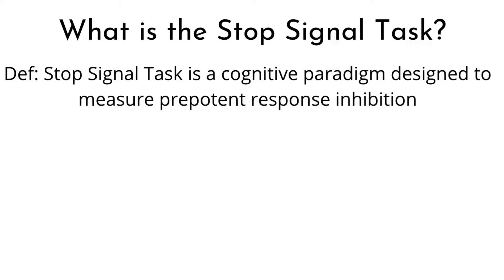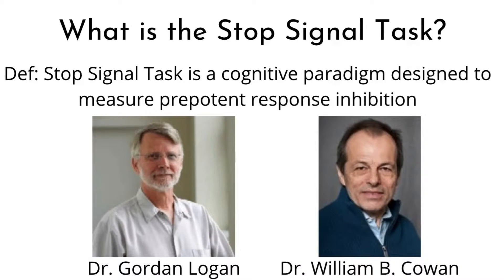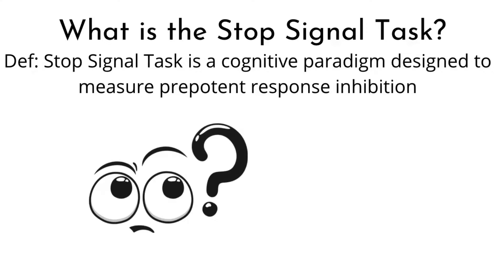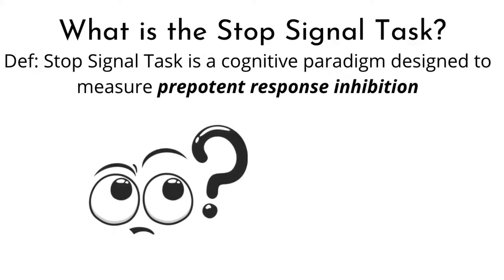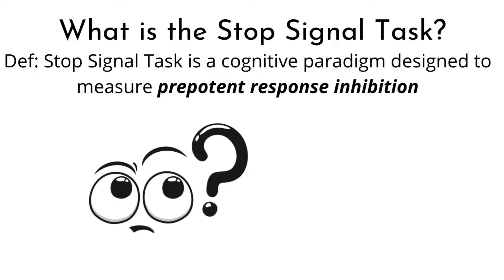The origin of the development of this task can be found in the works of two key figures in response inhibition research, namely Dr. Gordon Logan and Dr. William B. Cowan. In order to understand the structure of the Stop Signal Task and how it is implemented in cognitive studies, let us briefly tap into the concept that this task was designed to study: measuring pre-potent response inhibition.